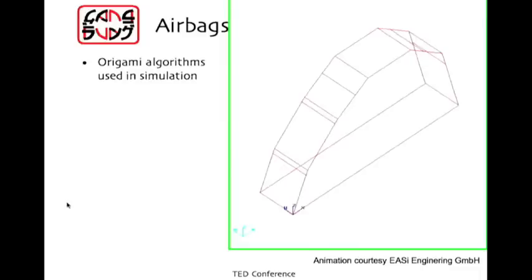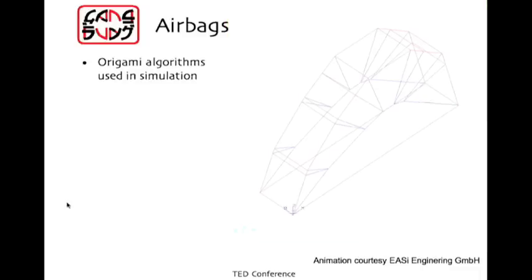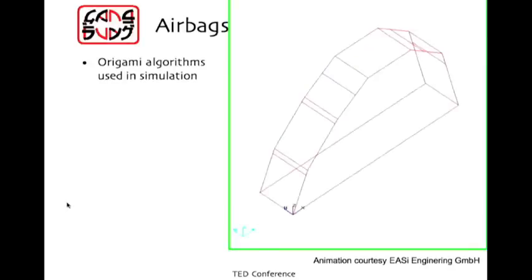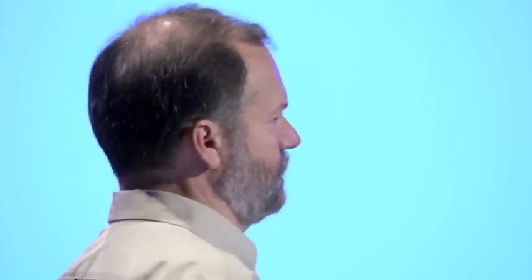Airbag designers also have the problem of getting flat sheets into a small space, and they want to do their design by simulation. So they need to figure out how in a computer to flatten an airbag. And the algorithms that we developed to do insects turned out to be the solution for airbags to do their simulation. And so they can do a simulation like this. Those are the origami creases forming. And now you can see the airbag inflate and find out, does it work?